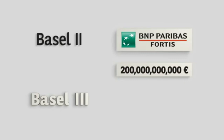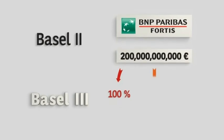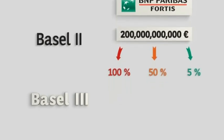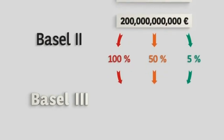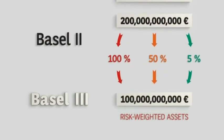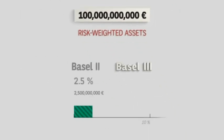Basel II states that some risks are associated with those loans, and Basel III continues this reasoning. This risk is not equal across all of those loans. The loans are weighted in order to arrive at the total amount of risk-weighted assets. Returning to the 200 billion of loans — some are weighted at 100%, some at 50% or less. In this instance, 200 billion of loans gives us 100 billion of risk-weighted assets. Basel II told banks to set aside 2.5% on the risk-weighted assets, or 2.5 billion in this case.